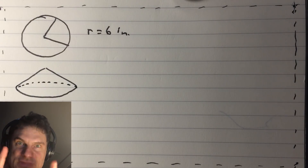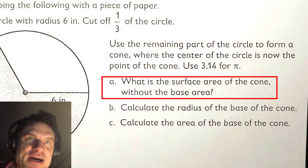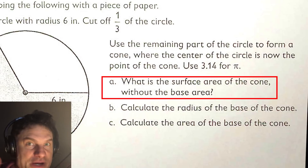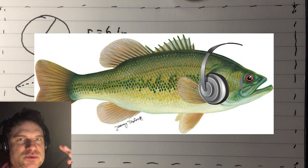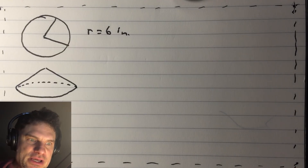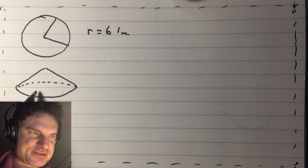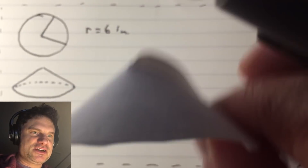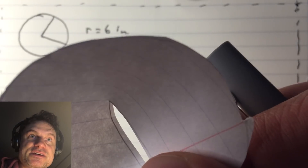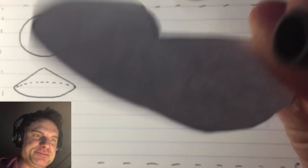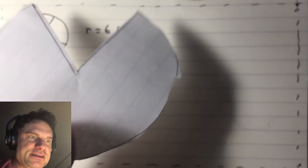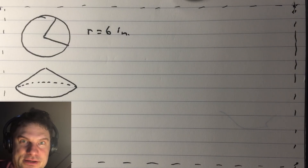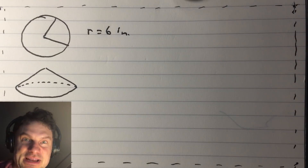Now the question: what is the surface area of the cone without the base area? Not base like bass in your face — wrong one. The base is this part, this bottom, the bottom of the cone. So if the cone was having a flat section here, this would be the base area. We are just wanting this part, this paper. So how do we find the surface area of this?